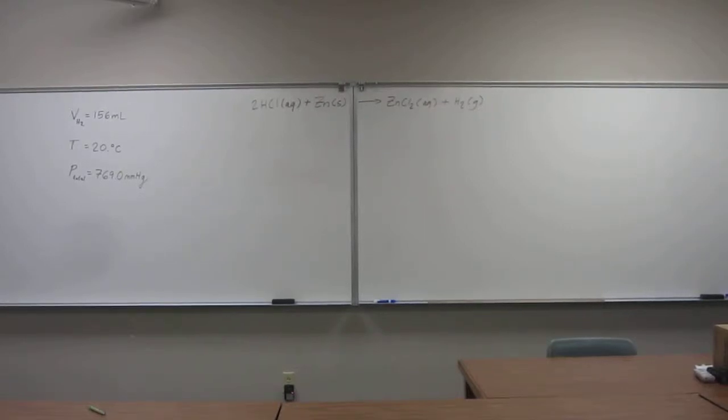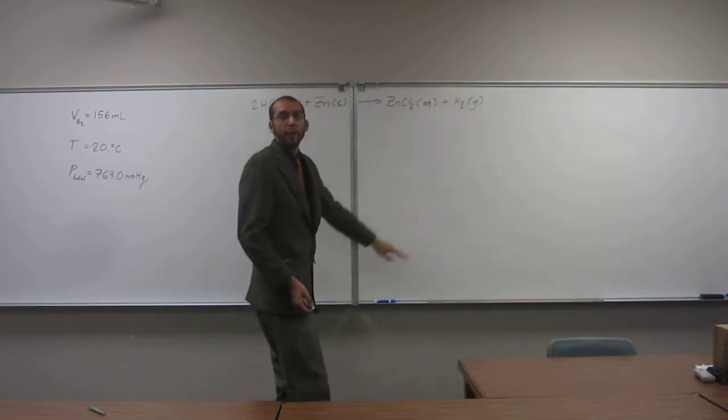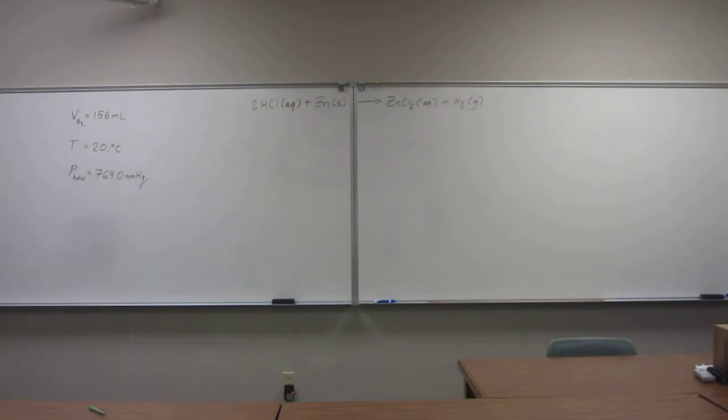Let's try another problem. We'll use Dalton's Law to figure out the mass of an insoluble gas that we collect over water. This would be like an experiment that you would do in the lab. Calculate the mass of hydrogen gas collected over water if 156 milliliters of gas is collected at 20 degrees Celsius and 769 millimeters of mercury. They give you the reaction equation that you're using to make your hydrogen gas. The hydrogen gas is coming off of this reaction. The reaction equation is just in there to kind of throw you off. It doesn't help you at all with this problem.